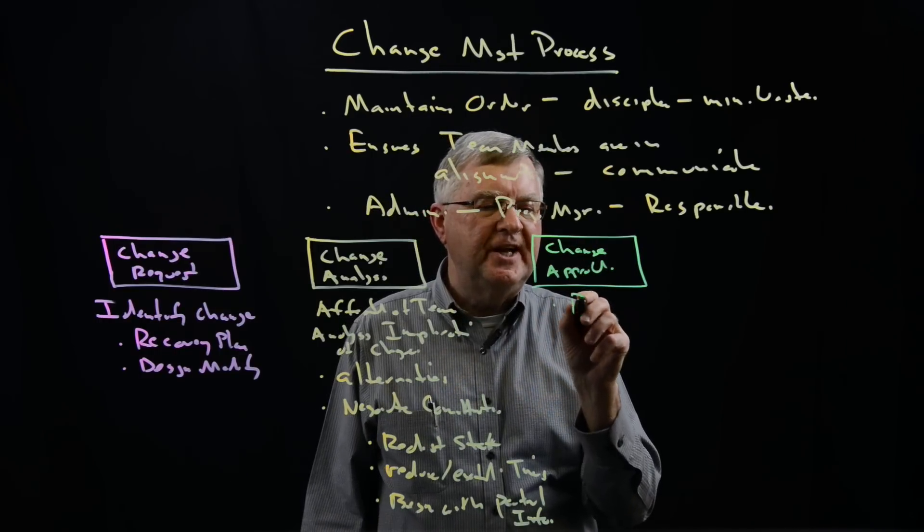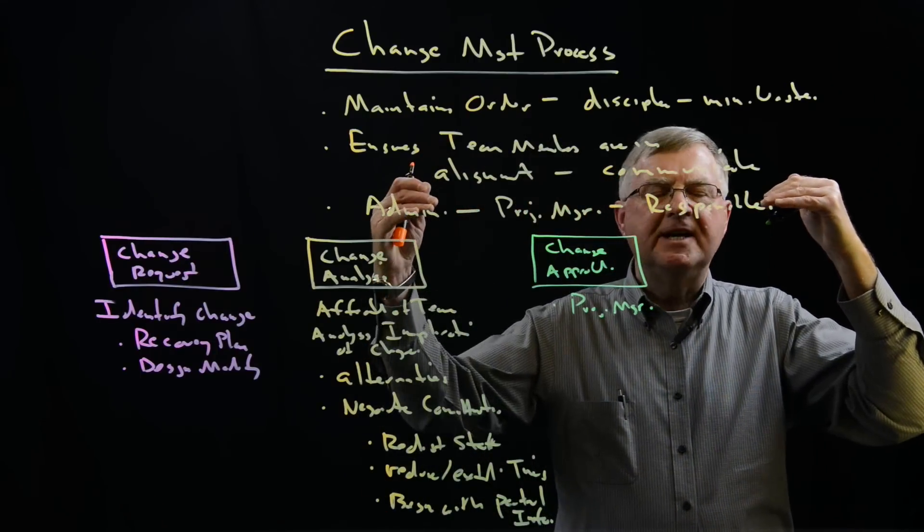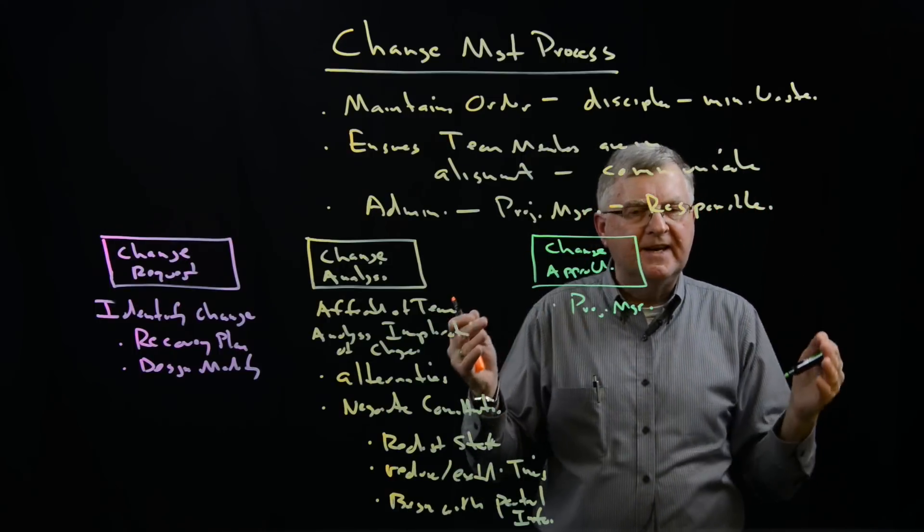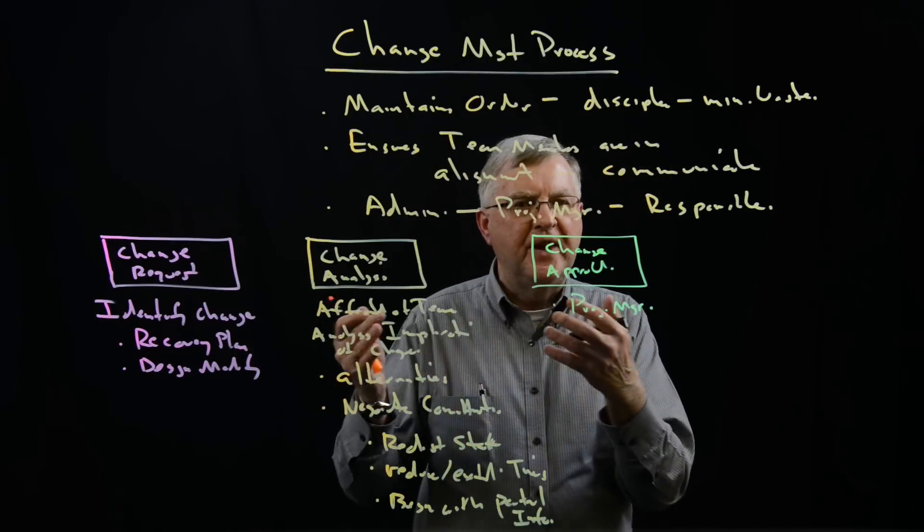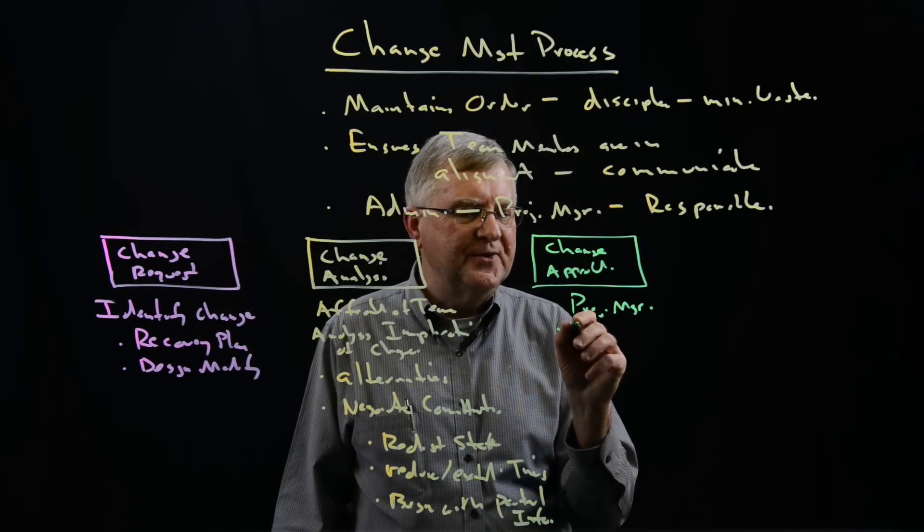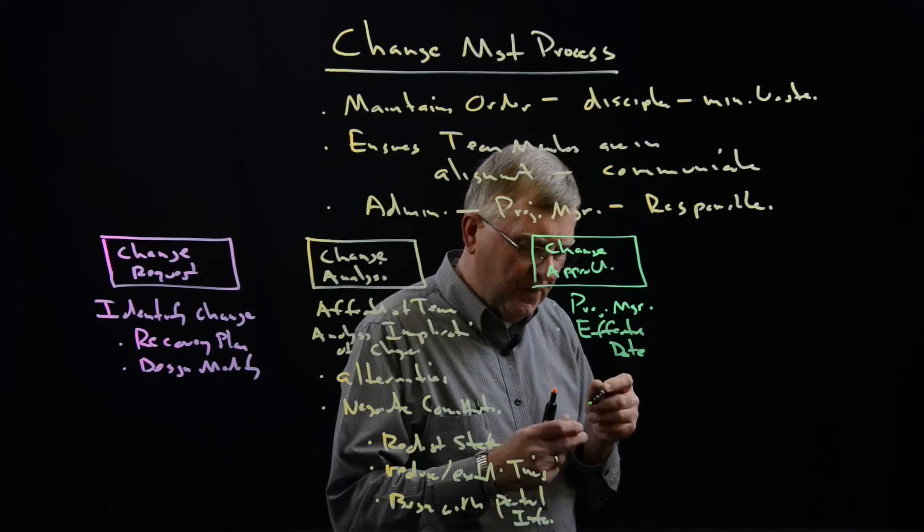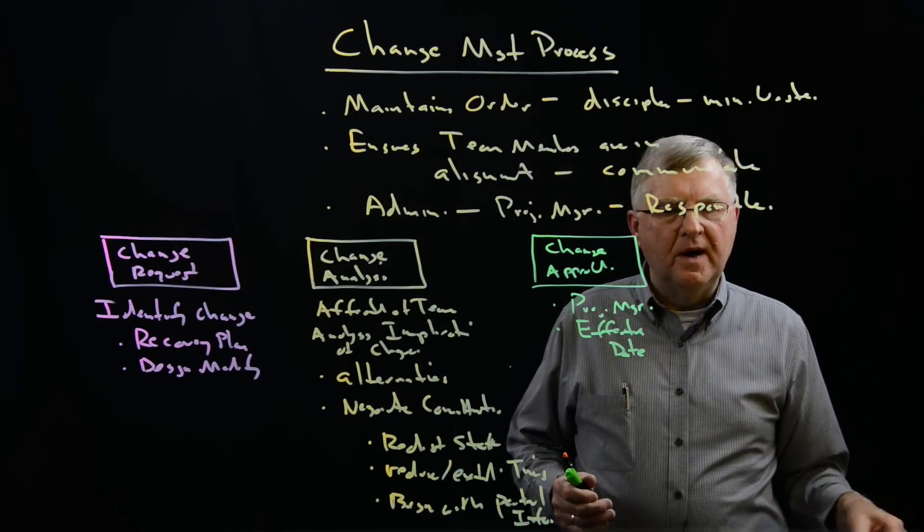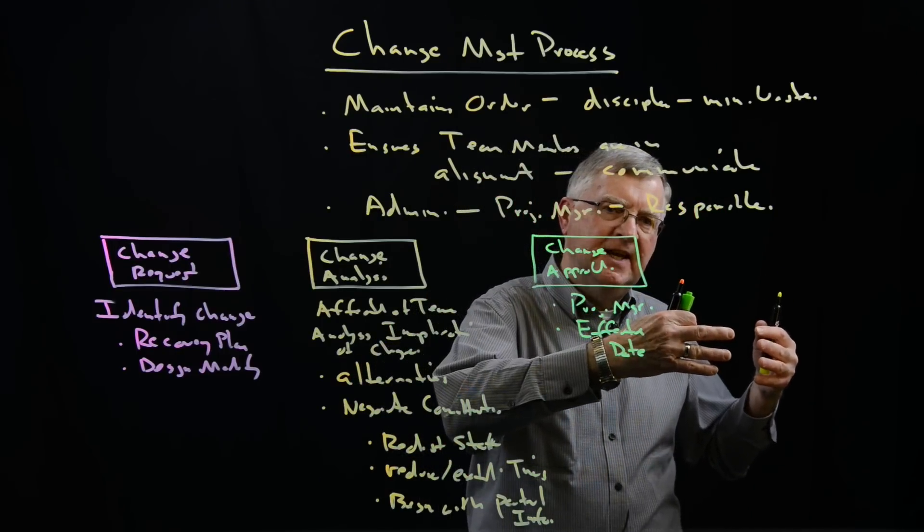And who approves the change? It's the project manager, because the project manager is responsible for administering the change and following through change. So we have a new plan of record now. This new plan of record incorporates the things that we've agreed to do in the change analysis. The project manager also establishes an effective date. When will this change take place? Will it take place immediately? Or will it be done in one or two weeks where we might want to complete several other tasks before we cut in this particular change?